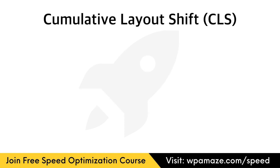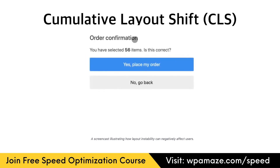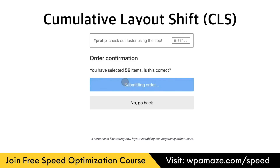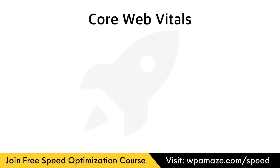CLS is a measure of the largest burst of layout shift scores for every unexpected layout shift that occurs during the entire lifespan of a page. A layout shift occurs anytime a visible element changes its position from one rendered frame to the next.